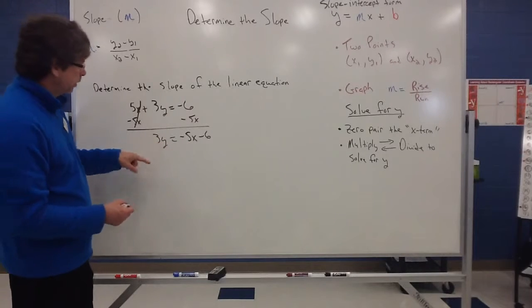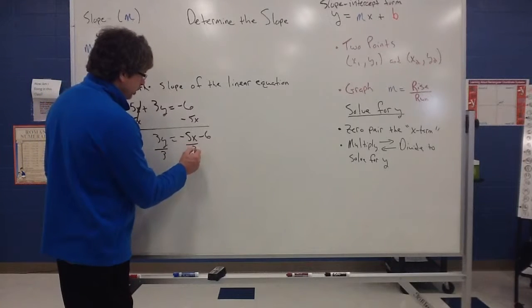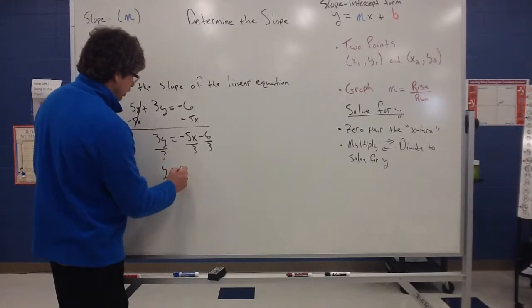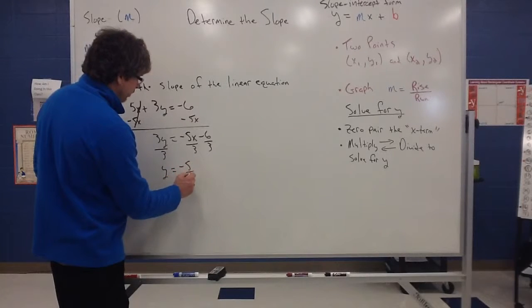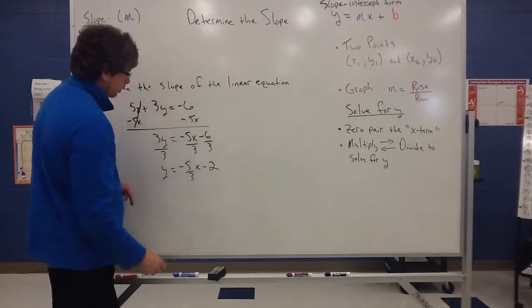Now to make that 3 disappear, we've got multiplication. So it's telling me to divide by 3. And when I do this, just divide each term over here by a 3. So I have y is equal to negative 5 thirds x, but 3 does go into 6 twice. So that's going to be minus 2.